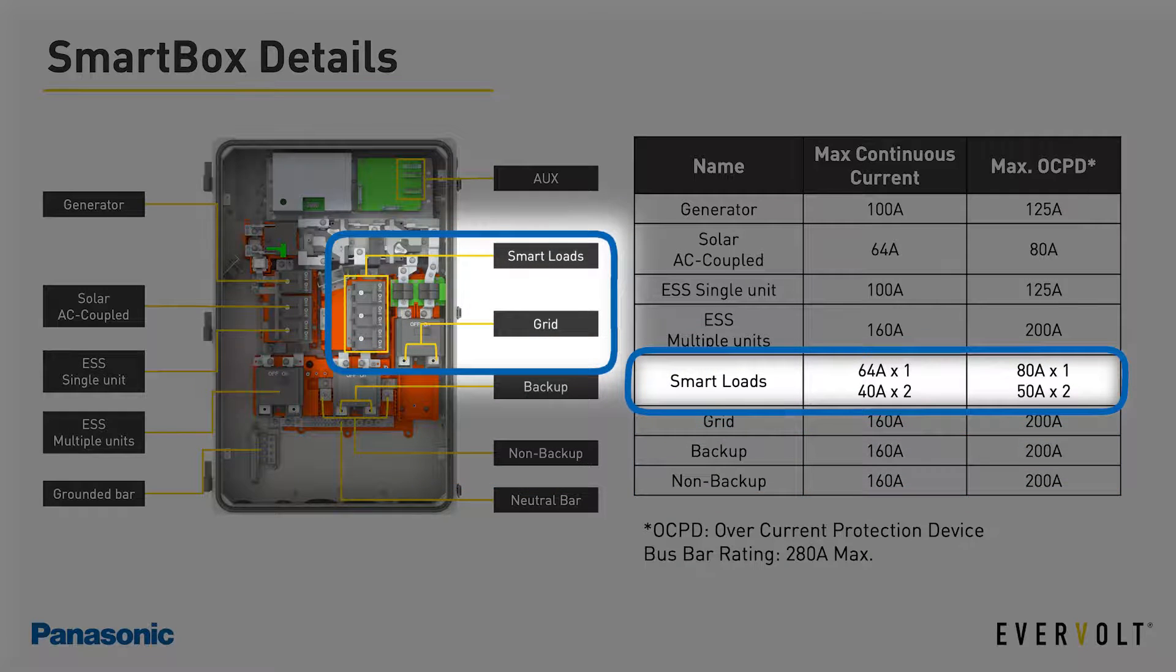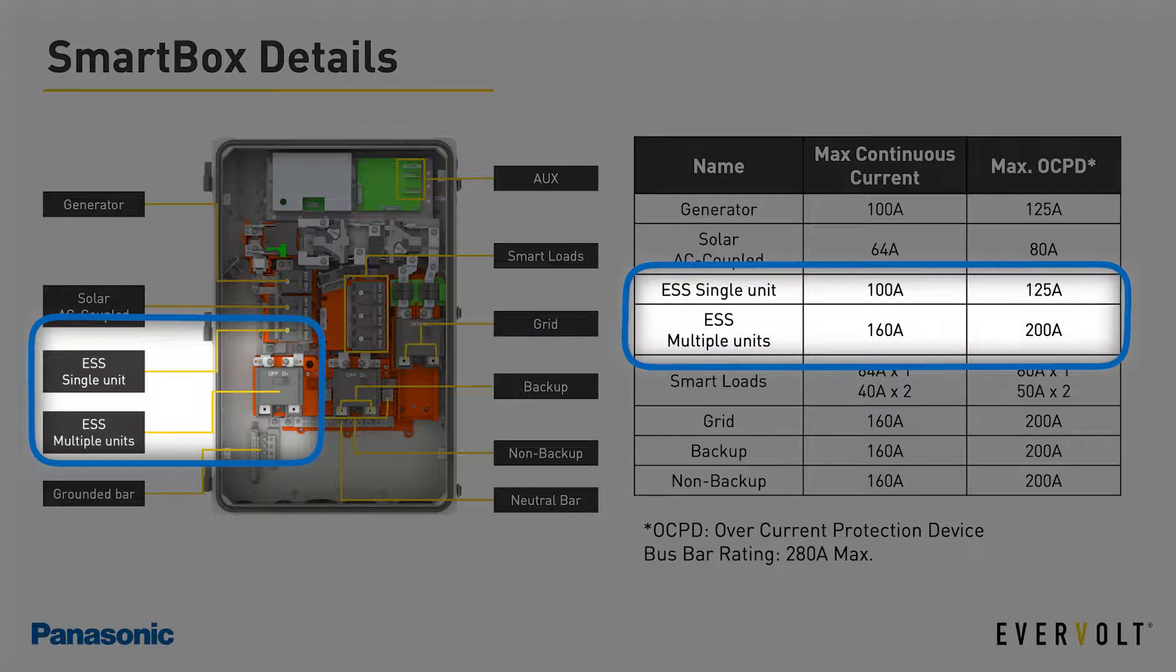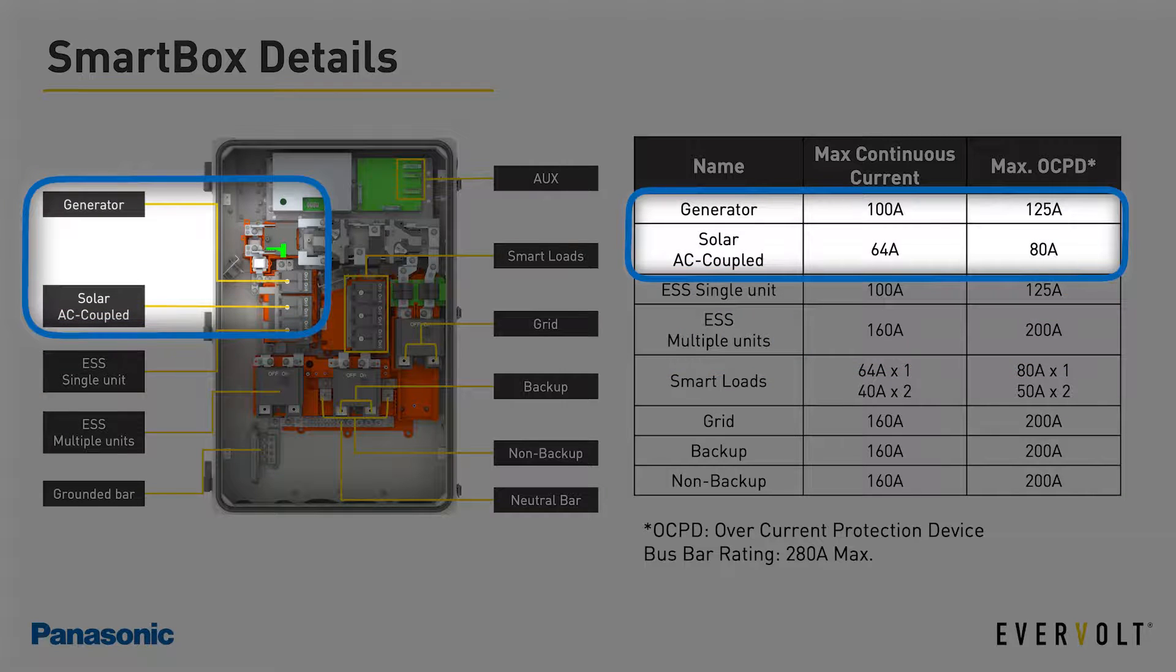The smart box also features six 120 volt smart loads or three 240 volt smart loads. The smart box can accommodate up to four Evervolt inverters as well as third-party AC coupled solar and third-party generators.